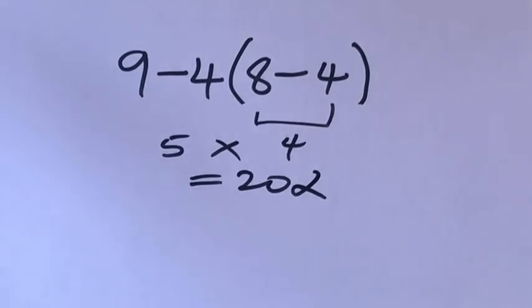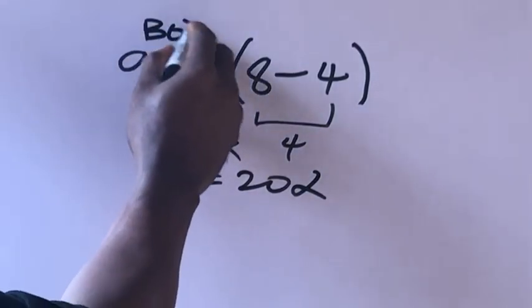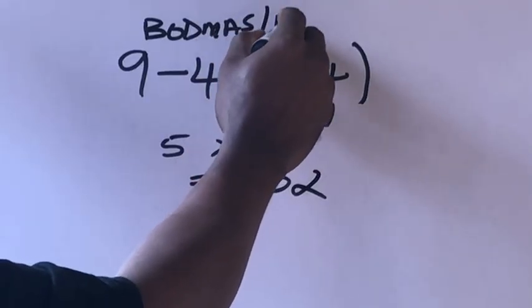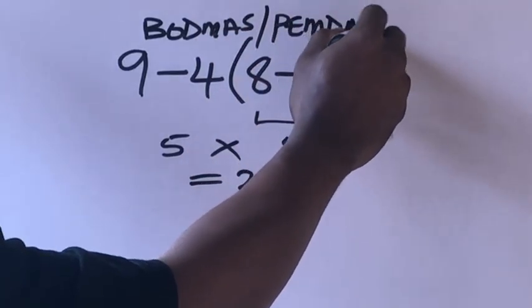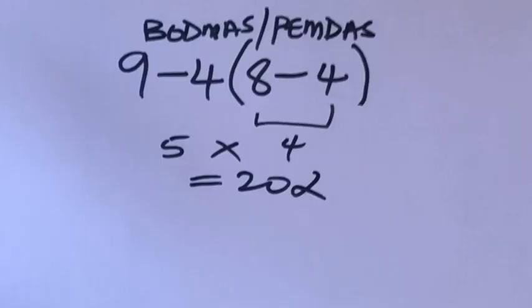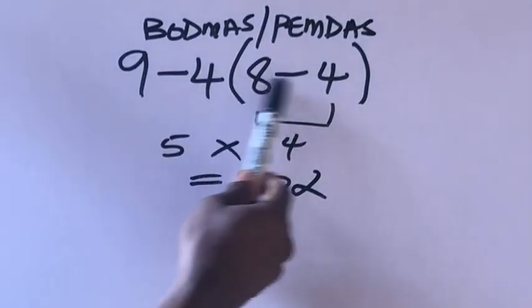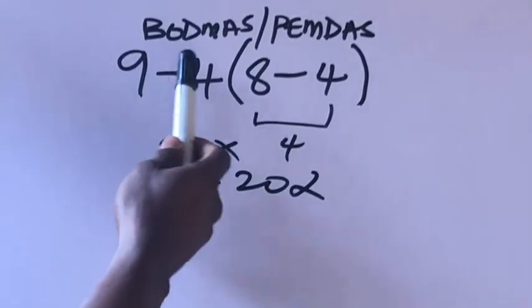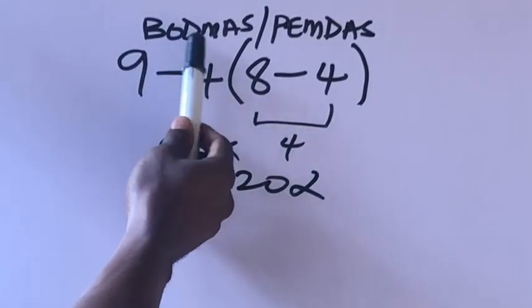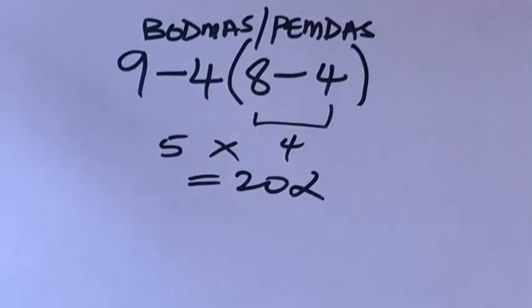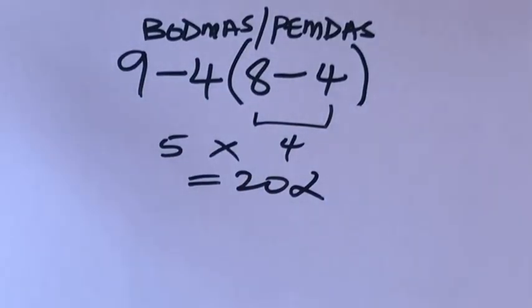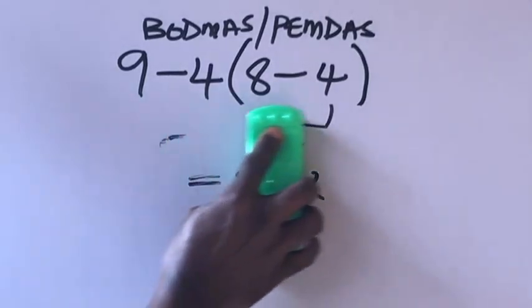According to order of operation, we have to first of all solve for the parenthesis, which is the bracket. Then we'll do division, multiplication, addition, and subtraction. So I'm going to erase this.